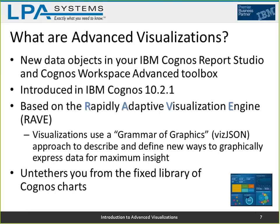It's based on a new graphics engine incorporated in the install called the RAVE engine, which stands for Rapidly Adaptive Visualization Engine. The RAVE engine is embedded in the Cognos server and when you run a report it renders the object and presents it to you, just like it renders a chart. It also embeds itself in any active report MHT file that uses a visualization, so those visualizations are rendered on the fly within the MHT.